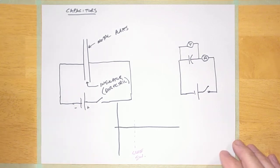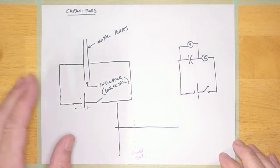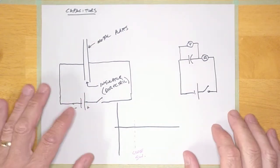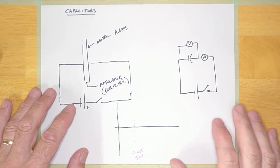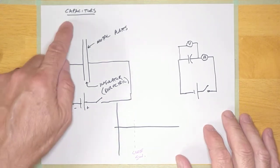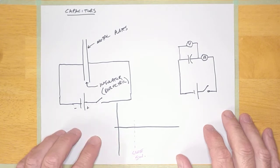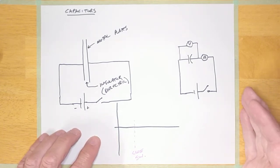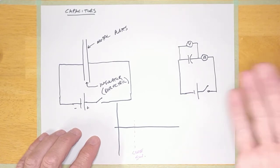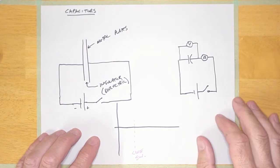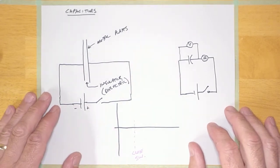Hey guys, welcome back. In this lesson, we're going to be talking about AC. I'm going to show you some stuff about capacitors when connected to a DC circuit. But really, in this class, we're more interested in what happens when I connect a capacitor in an AC circuit. Like with inductors, in order to understand why a capacitor behaves the way it does in AC, it's a good idea to understand the way it behaves in DC.